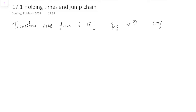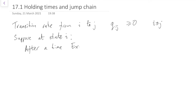Suppose we are at state i. Then we've got various transition rates from i: q_i1, q_i2, q_i3, q_i4, and so on. After a time that's exponentially distributed with rate q_ij — the transition rate — if we haven't yet moved, then we move to j.